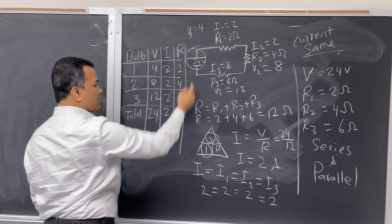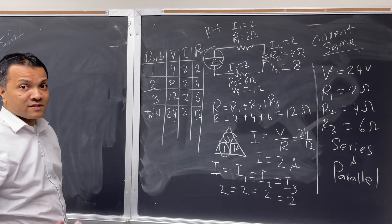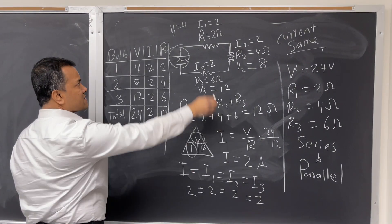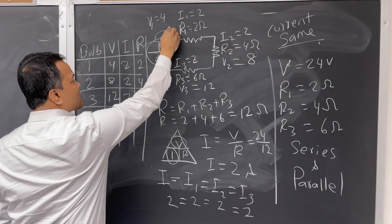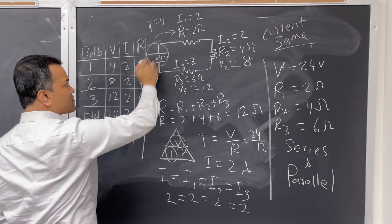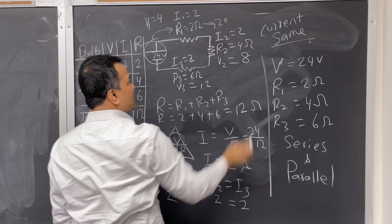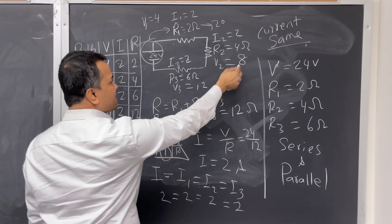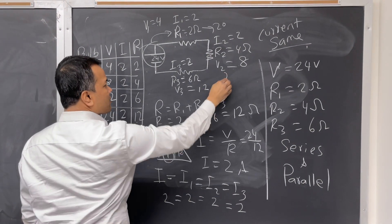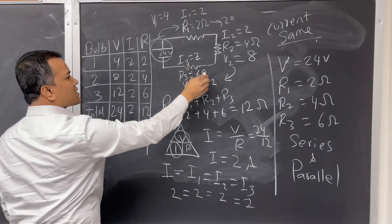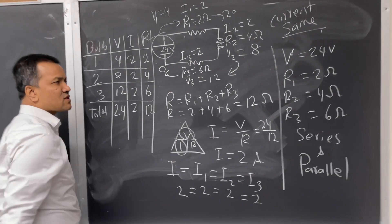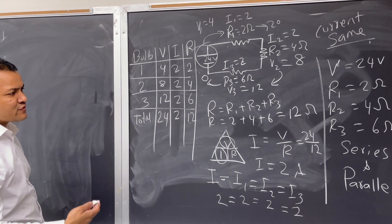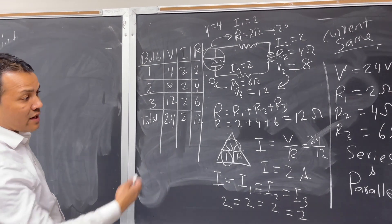Now I'll show the voltage drops. The first bulb gets 24 volts and consumes 4 volts, releasing 20. The second bulb gets 20 volts, consumes 8 volts, and releases 12. The third bulb gets 12 volts and releases 0. This is called voltage drops in a series circuit.